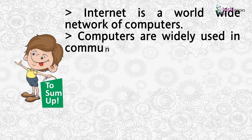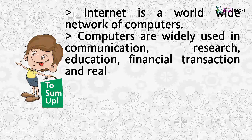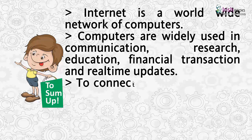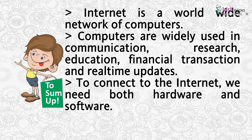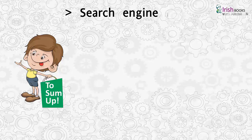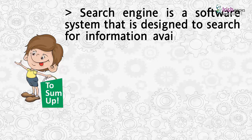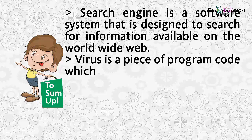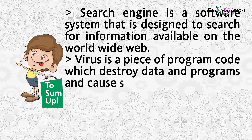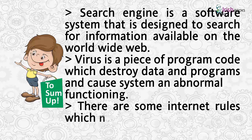To sum up: the internet is a worldwide network of computers. Computers are widely used in communication, research, education, financial transactions, and real-time updates. To connect to the internet we need both hardware and software. A search engine is a software system designed to search for information on the World Wide Web. A virus is a piece of program code which destroys data and programs and causes abnormal functioning. There are internet safety rules which need to be followed.